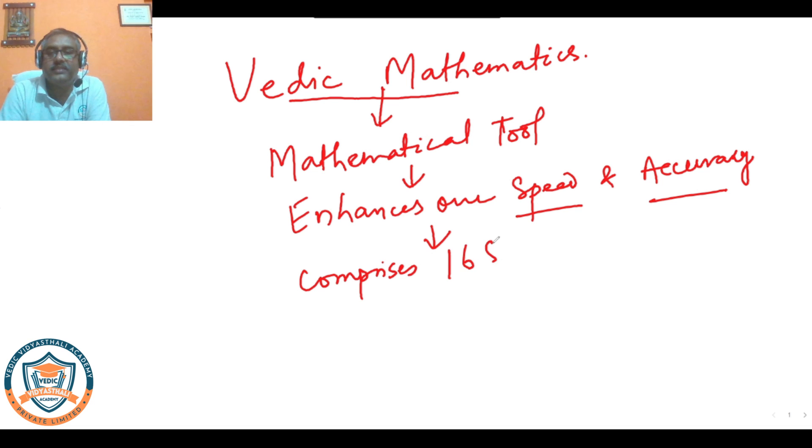It comprises of only 16 sutras and 13 sub-sutras. Sutras and sub-sutras are principles. All together 29 principles are there, based on which Vedic Mathematics can be understood.